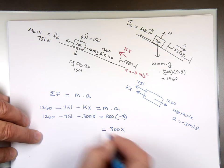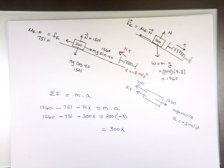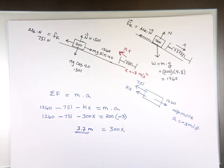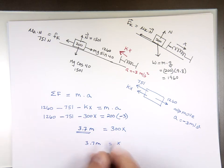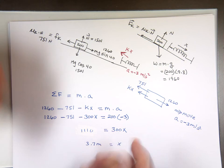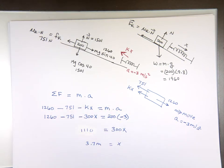So 1260 minus 751 minus 300 times X equals the mass which is 200 times the acceleration and the acceleration is negative 3. I'm moving this one there. I'm moving this plus. It's going to travel 3.7 meters. 3.7 meters so that number is 1110 I think when you do all the other pieces. When you bring this to this side becomes a plus you take this one to that side becomes a plus. So it's going to travel roughly four meters before it comes to a stop at a safe speed.